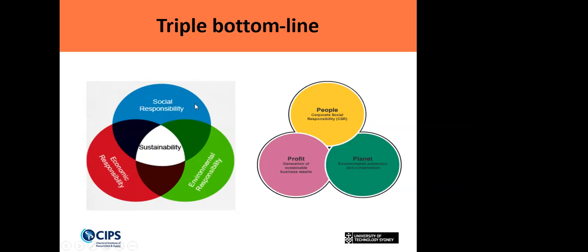People relates to the social component, planet relates to the environmental component, and profit relates to the economic component of the triple bottom line. When you mean sustainability, it has three main considerations — social, environmental, and economic — and you need to minimize social and environmental impact while also being economically sustainable.